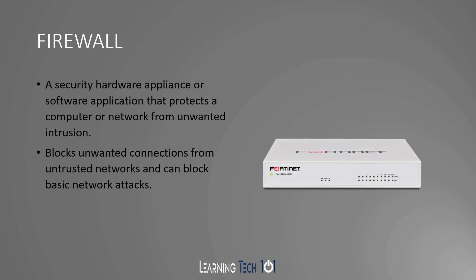Next we have your firewall. This is a security hardware appliance or software application that protects a computer or network from unwanted intrusion. It blocks unwanted connections from untrusted networks and can block basic network attacks. Your firewall sits on the border of your network, and anything trying to come into your network goes through it to determine whether that traffic should be allowed or not.